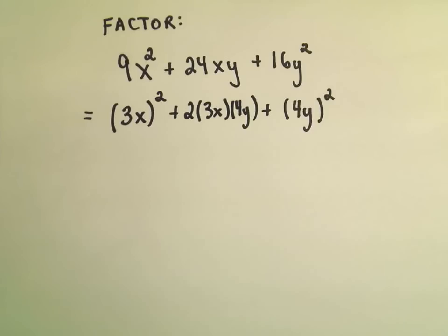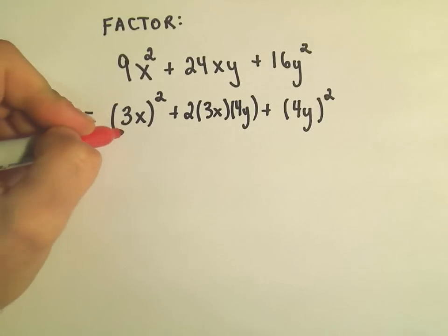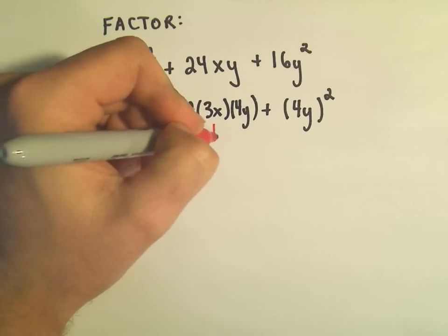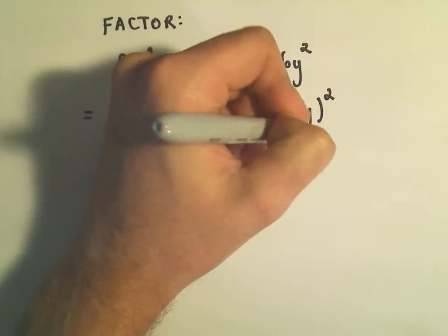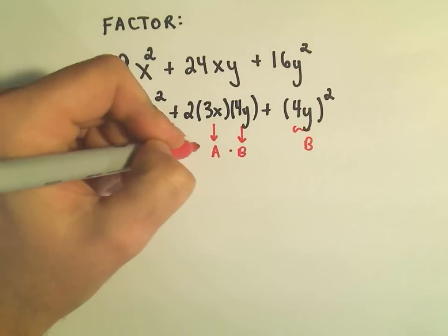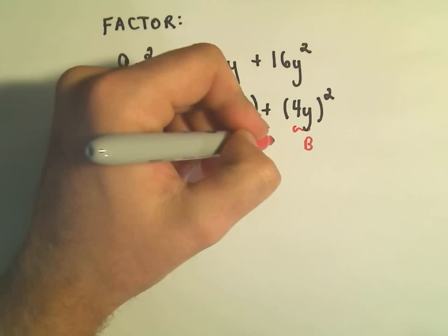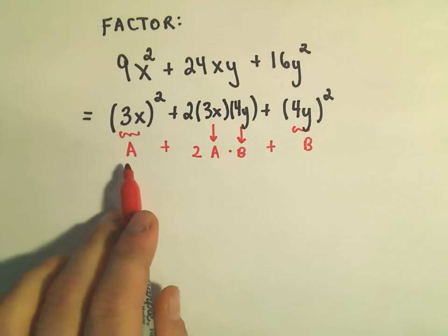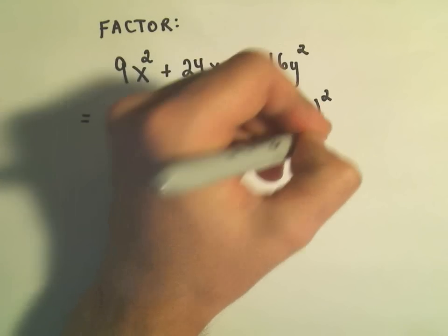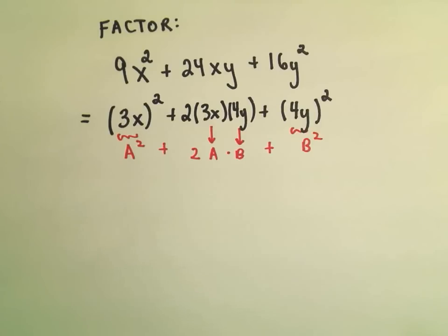And now we have this pattern, this formula we saw just a second ago. This is our a. Here's our a again. This is what we labeled as our b term. So here we are multiplying it by b. And notice we're multiplying it by 2. So we do have this formula of a squared plus 2ab plus b squared.